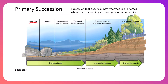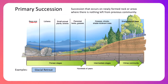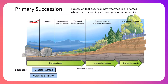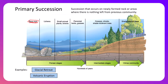With primary succession, you've got that bare rock — absolutely nothing left behind. What's a situation where we might have this in nature? Several examples could be glacial retreat, where a glacier melts and retreats, leaving bare rock underneath. It could also be a volcanic eruption, where magma or lava covers the area and eventually hardens into rock.